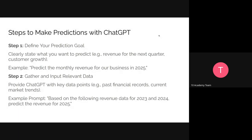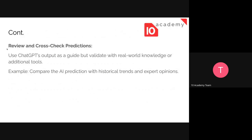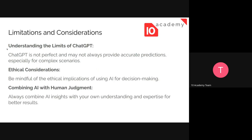The next best practice is using recent and relevant data. Make sure the data you provide is up to date and relevant, including recent sales trends and economic conditions. The final best practice is to review and cross-check the prediction. Validate the prediction against real-world data and get an expert's opinion.